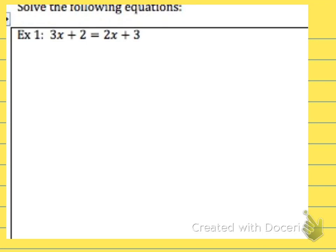We're going to look at example one and solve that equation. Remember when we're solving, we want to get a variable by itself on one side. This has variables on both sides, so I need to get the variables to one side. I'm going to subtract 2x from both sides of the equation. That leaves me with 1x plus 2 is equal to 3. Then I subtract 2 from both sides to get the x by itself.